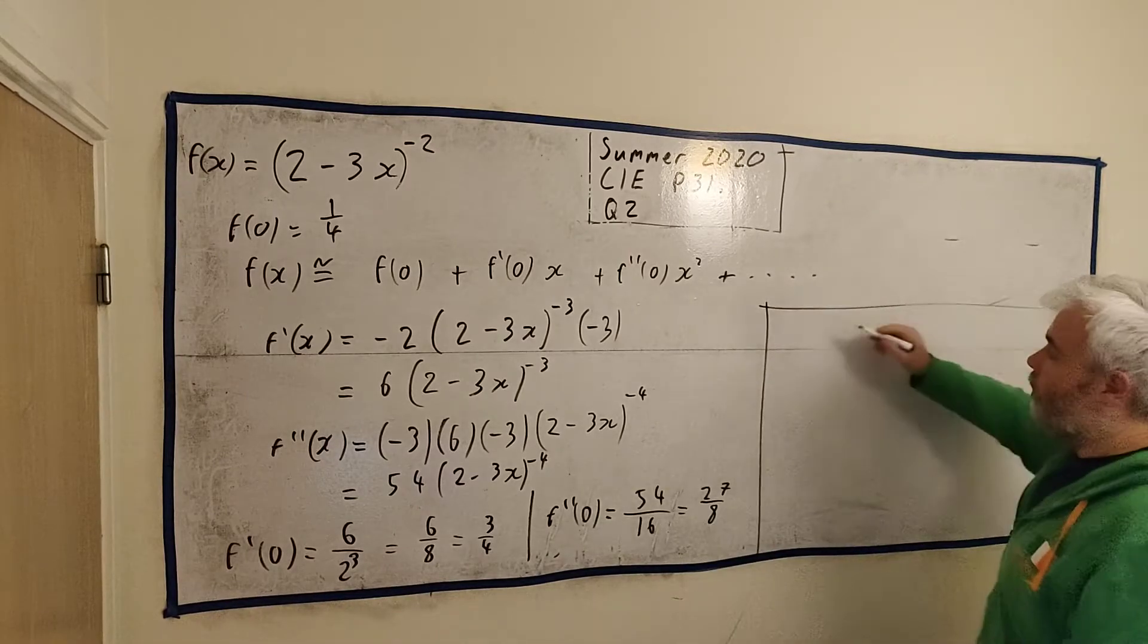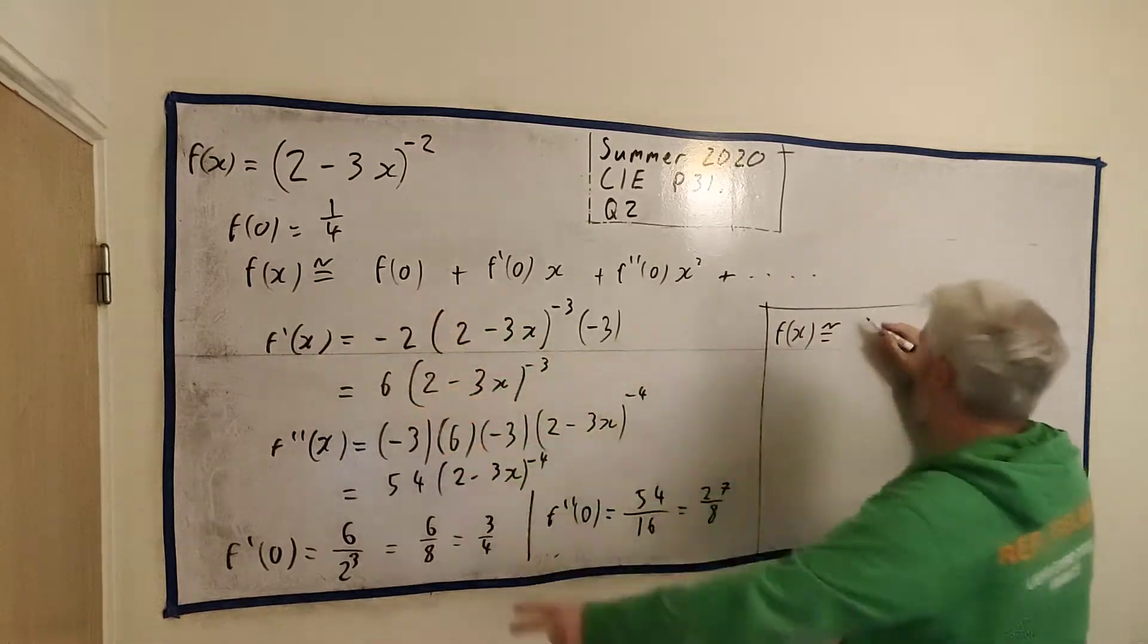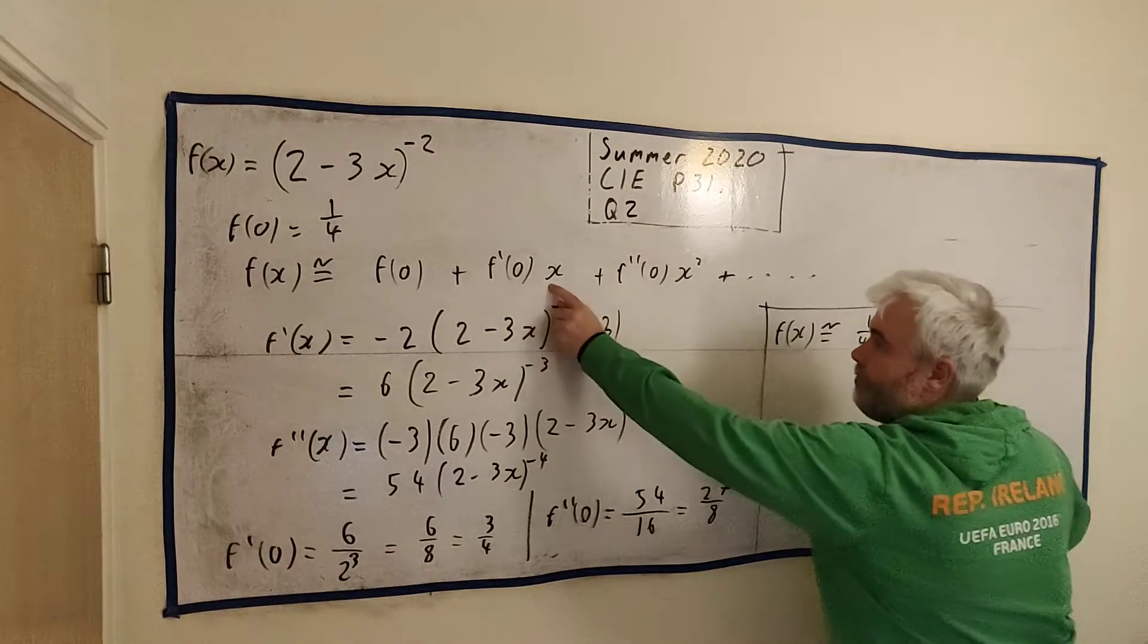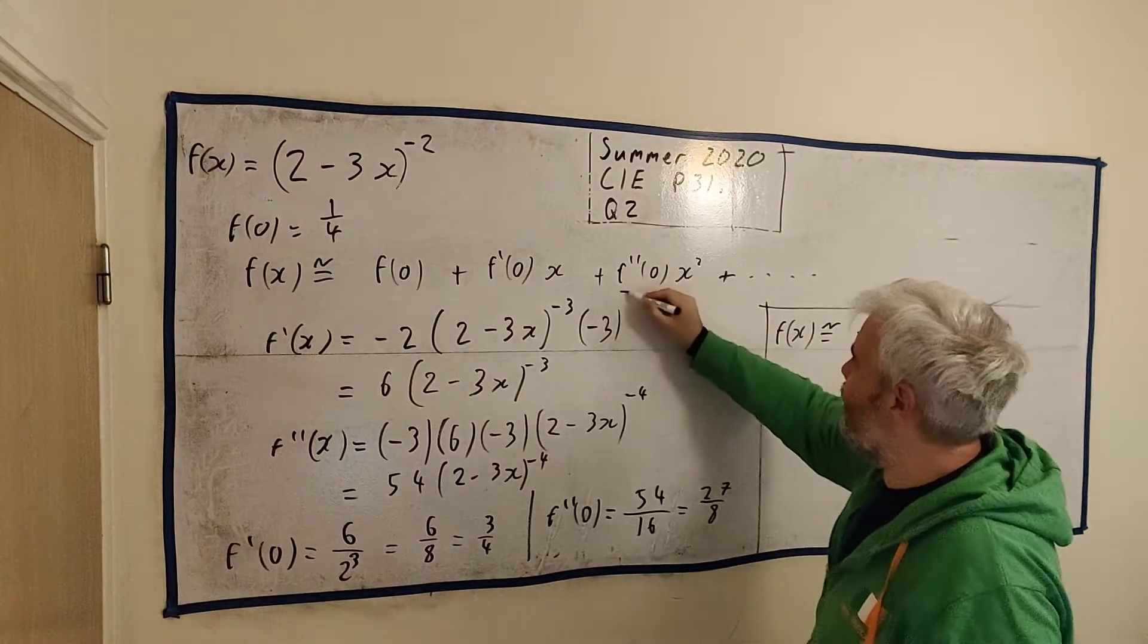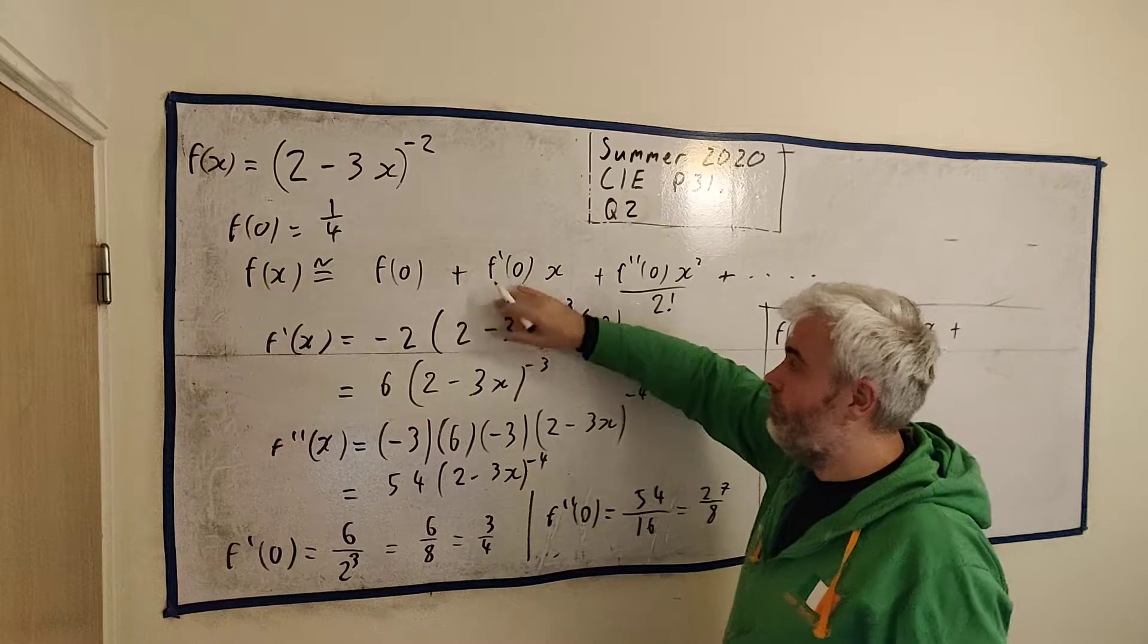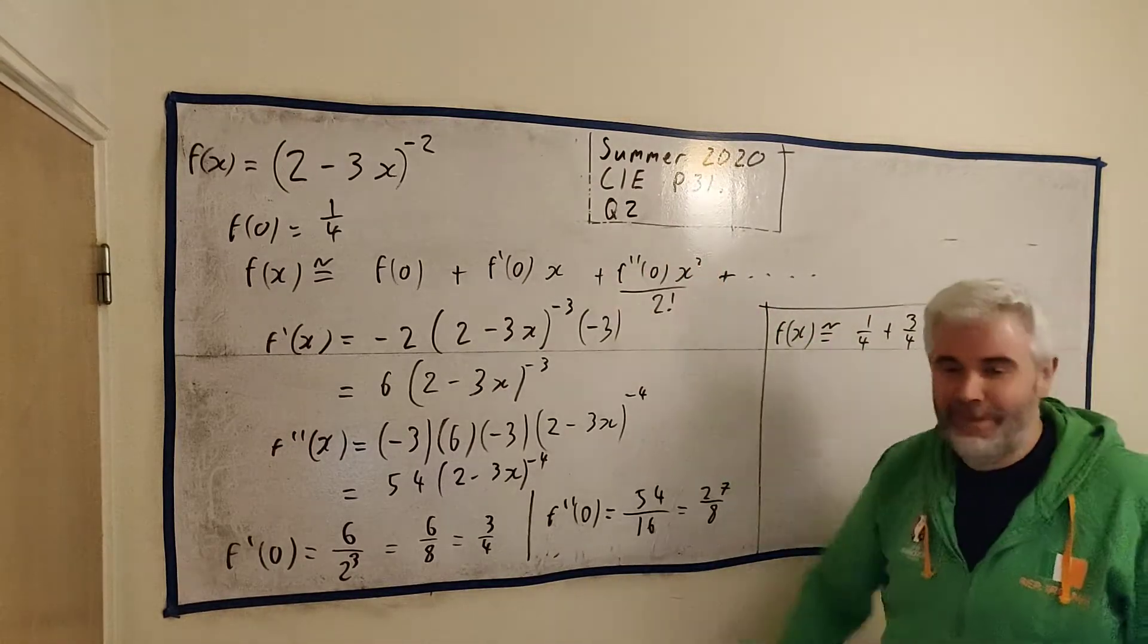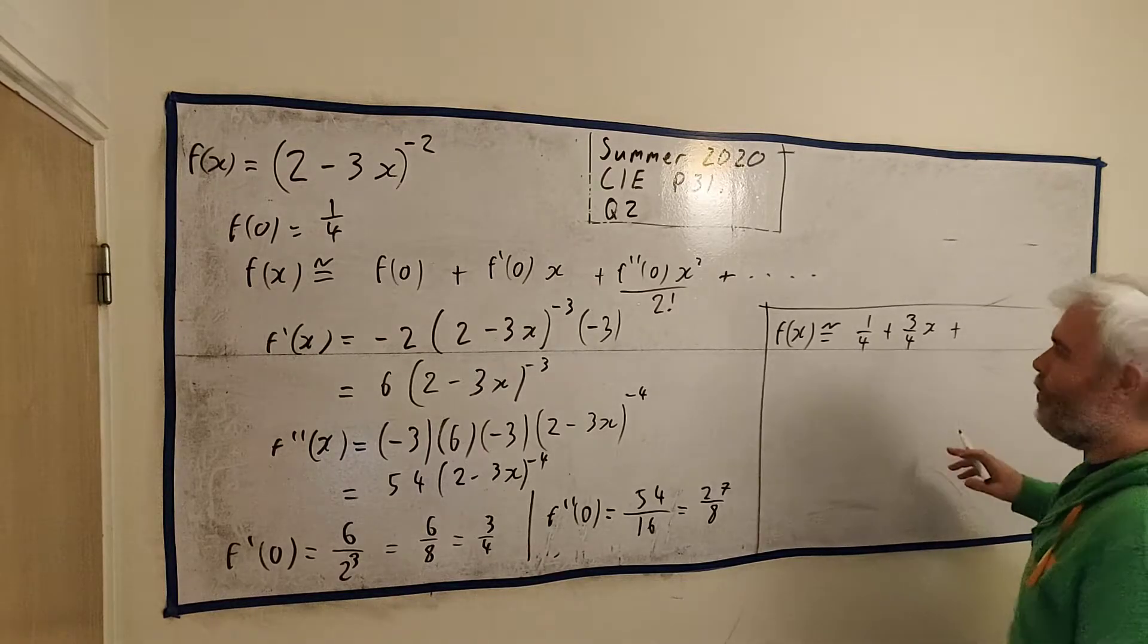We can look at the McLaren series now. f(x) is approximately equal to f(0) is a quarter plus the first derivative of f(0), 3 over 4 times x. And the second derivative of f(0) was 27... Oh, I'm sorry. I'm forgetting something from the McLaren series. Divided by second factorial. Divided by the first factorial, which is just 1. Divided by 0 factorial, which is just 1. The next one would be 3 factorial, 4 factorial, and so on. Apologies, that's been missing. Hopefully, some of you have been shouting at the video saying, You're forgetting the factorial.